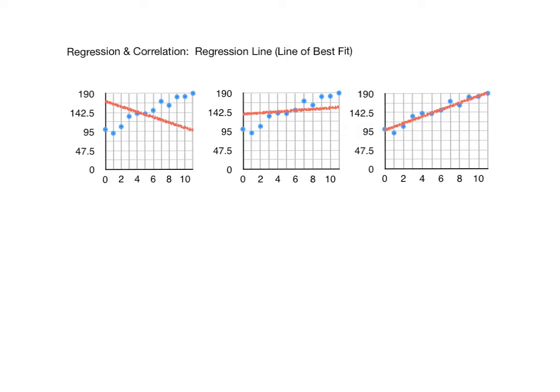Let's first establish an idea of what we mean by line of best fit. Here you've got the scatter plot repeated. Does this line fit that data well? Certainly not. As we described, the general relationship is increasing — as the years go by the profits are increasing — whereas this line is a decreasing line. It has a negative slope, so this line is certainly not a good representation of this relationship.